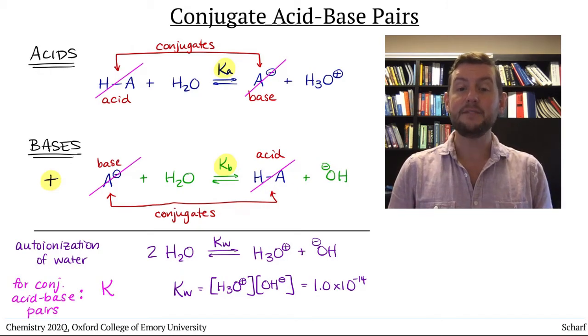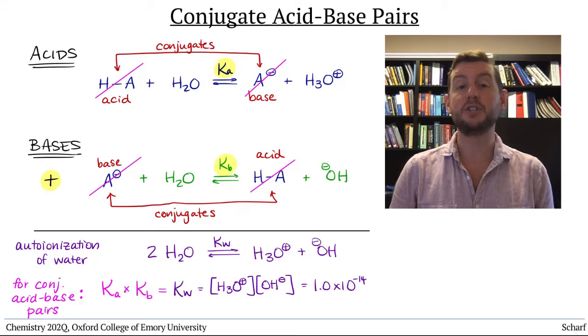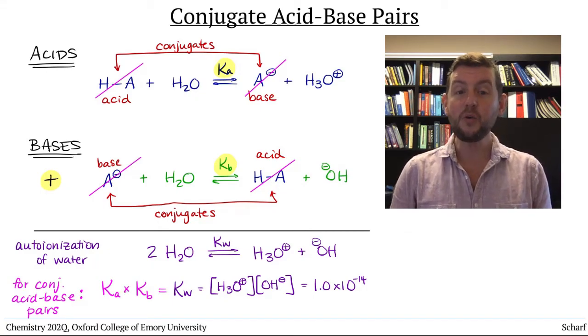The Ka of the conjugate acid times the Kb of the conjugate base always must equal 1.0 times 10 to the minus 14.